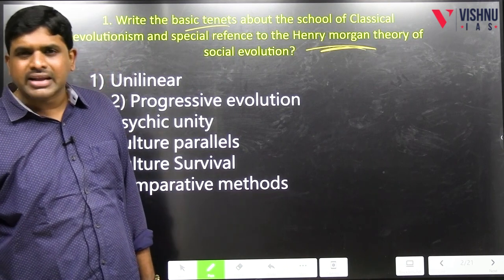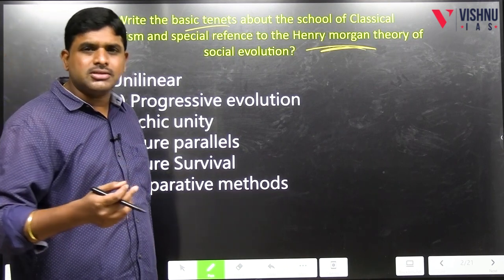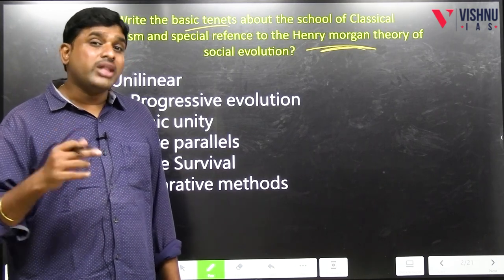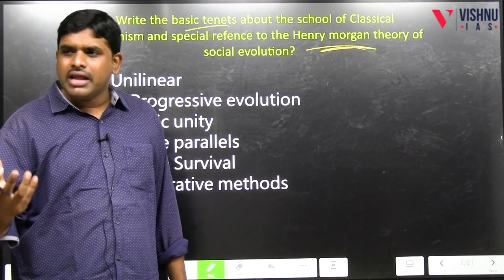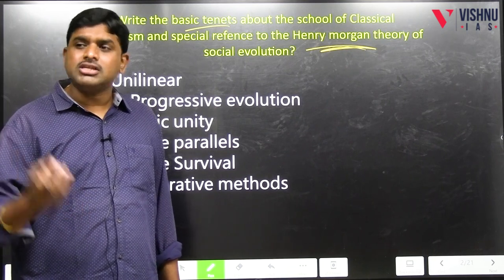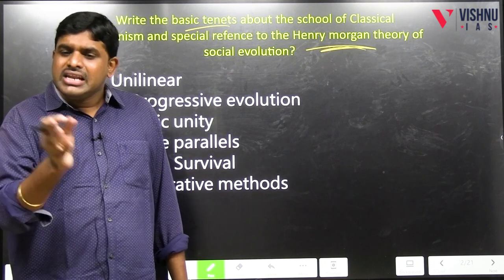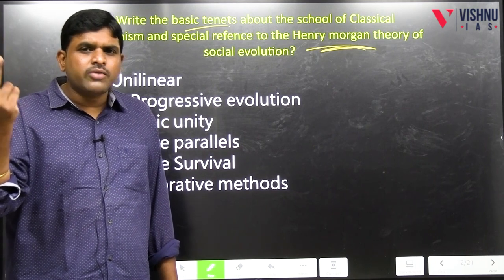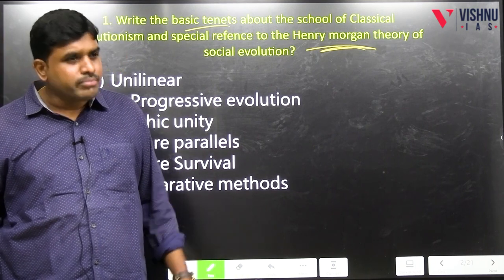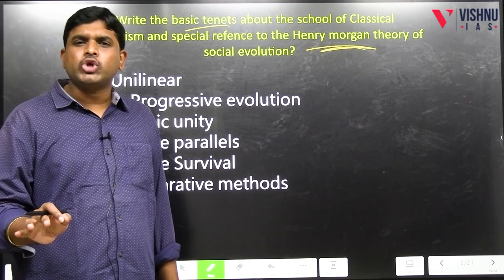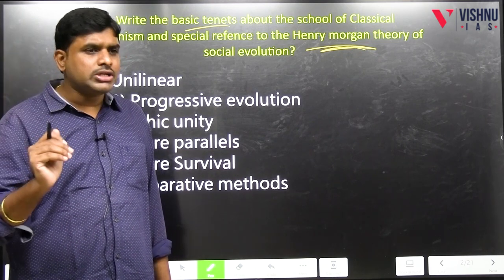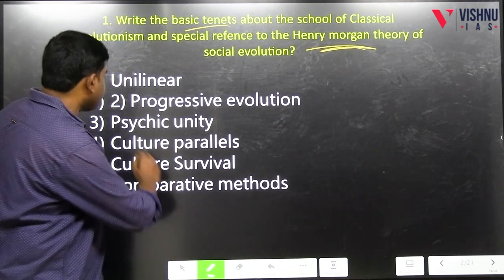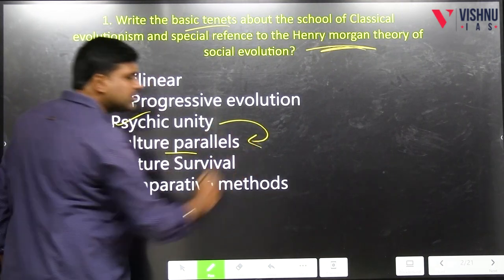Third contribution: Psychic unity of mankind. As people's needs are the same, in order to satisfy the needs of man — when the environments are similar, the response which comes out is called culture. Since those needs are similar, the cultures are similar, and that particular process of thought for the satisfaction of needs is called psychic unity of mankind. This process is also named as independent evolution or culture parallels.